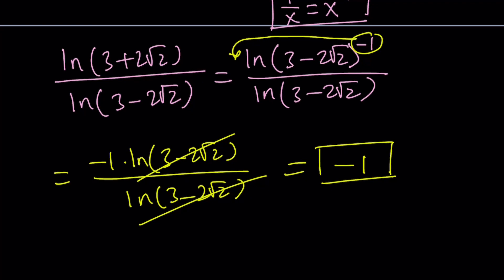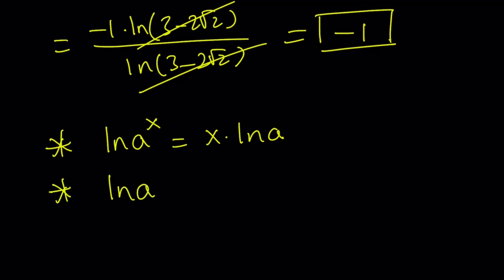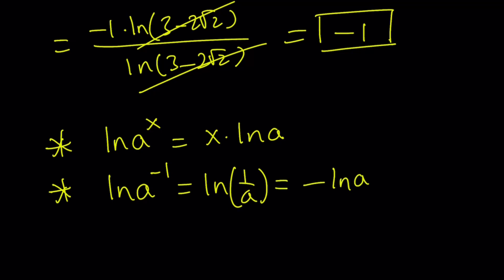Let's look at some of the properties we used. We used a property that says: if you have ln(a to the power x), you can write it as x times ln(a). And in particular, if x equals negative 1, then ln(a to the power negative 1), or ln(1 over a), equals negative ln(a). So these two are opposites.